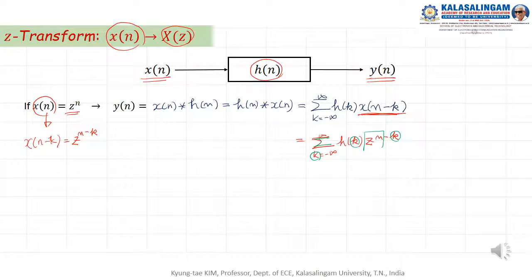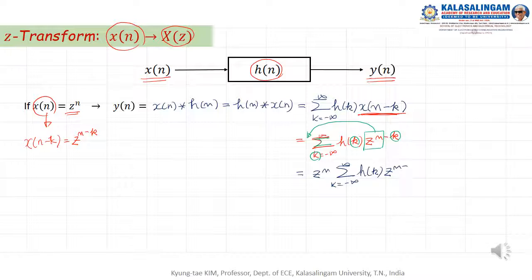For this summation over variable K, Z to the power of N is a constant, so we can factor it out. We then write: Z to the power of N times summation of H of K times Z to the minus K. This part we define as H of Z.